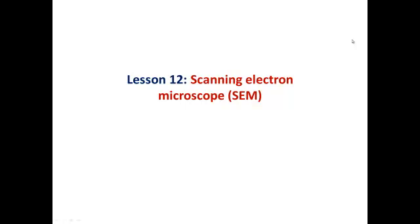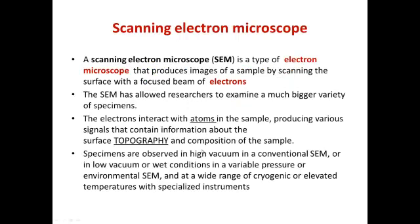The scanning electron microscope is a type of electron microscope that produces images of a sample by scanning the surface with a focused beam of electrons. The source of electrons is the electron beam, just like the transmission electron microscope, and it is also known as SEM. This allows researchers to examine a much bigger variety of specimens.